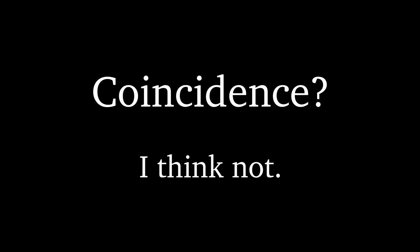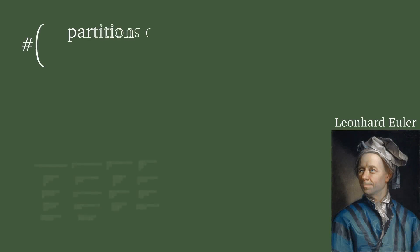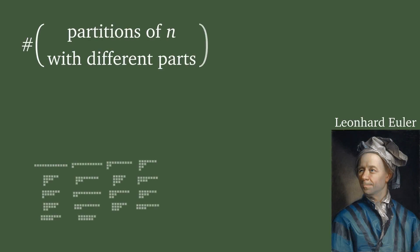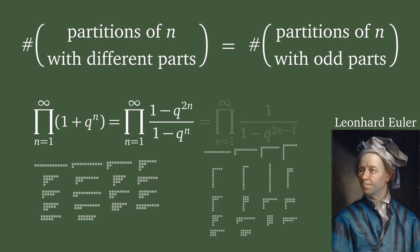Coincidence? I think not. And neither did Leonard Euler. Around 1750, he actually proved that for any positive integer n, the number of partitions of n where all parts are different is the same as the number of partitions of n where all parts are odd. Euler's proof uses an elegant and useful tool — so-called generating functions — and can even be put in one line, which we could discuss in detail to follow Euler's reasoning. However, it mostly consists of multiplying out products and collecting terms. Nothing too insightful.